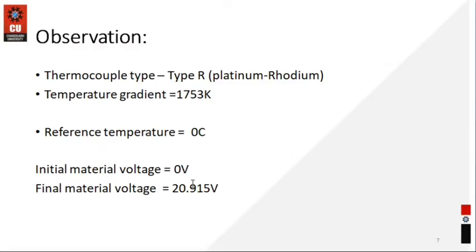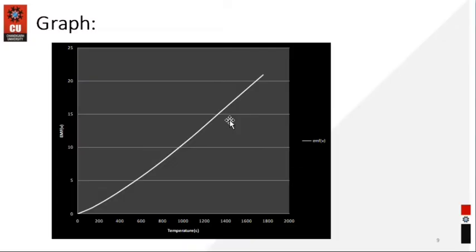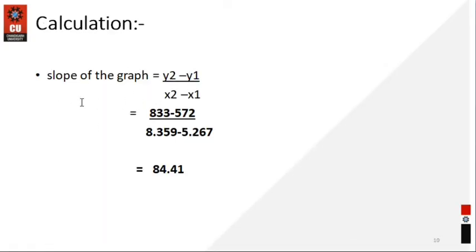The initial material voltage and the final material value is what we are using in our calculations of the Seebeck coefficient. These readings you can put in Microsoft Word or plot a graph. This is the graph — those readings you can put in your graph and plot it. If you want to know how to plot a graph I will give the link in my description box. This graph shows the variation between the EMF and the temperature.